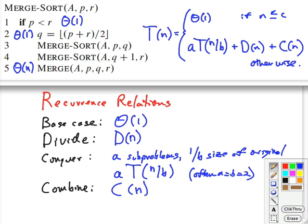That is the general schema for doing analysis of divide and conquer type algorithms using recurrence relations. And now we will plug in what we know about the merge sort to solve this for merge sort.